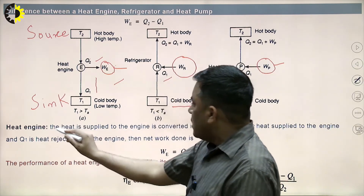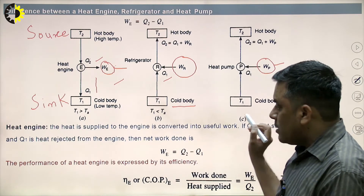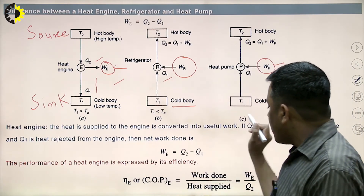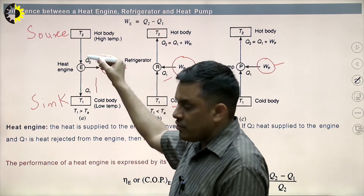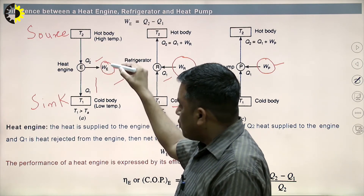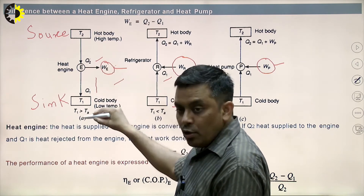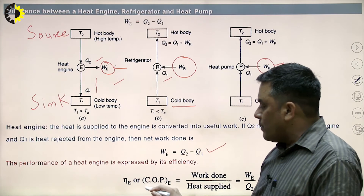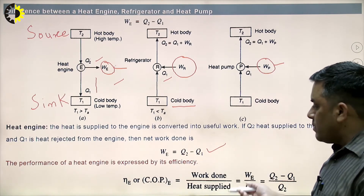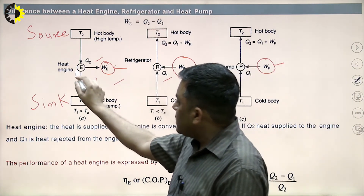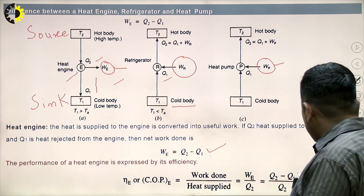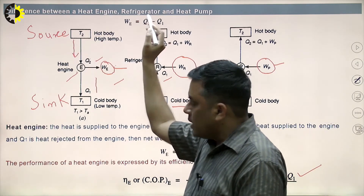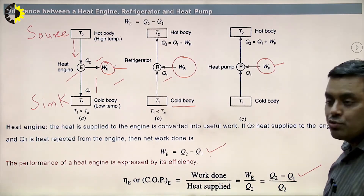In a heat engine, the heat supplied is converted into useful work. If Q2 heat is supplied to the engine and Q1 heat is rejected, then net work W_e equals Q2 minus Q1. Q2 is extracted from the high temperature body, some part is converted into useful work, and the rest goes to the low temperature body. The efficiency of the heat engine is output upon input, which equals W_e upon Q2, or equivalently Q2 minus Q1 upon Q2.